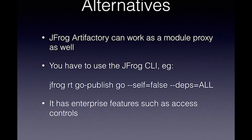There are some alternatives as well. Artifactory can also work as a module proxy — we looked at it at Speechmatics and it wasn't fully successful, partly because we were using an older version which didn't really support it. The annoying thing is you have to use their tools: you have to have a wrapper called jfrog rt go, you have to put that around your go code. Also the first time you publish anything you need to do a separate command so it knows your modules and uploads them to Artifactory.